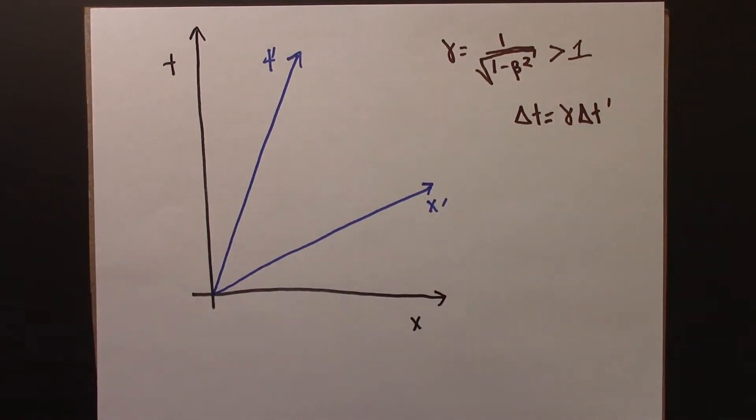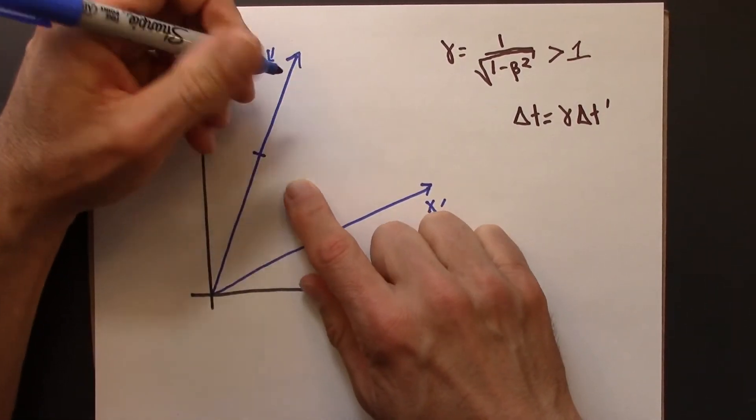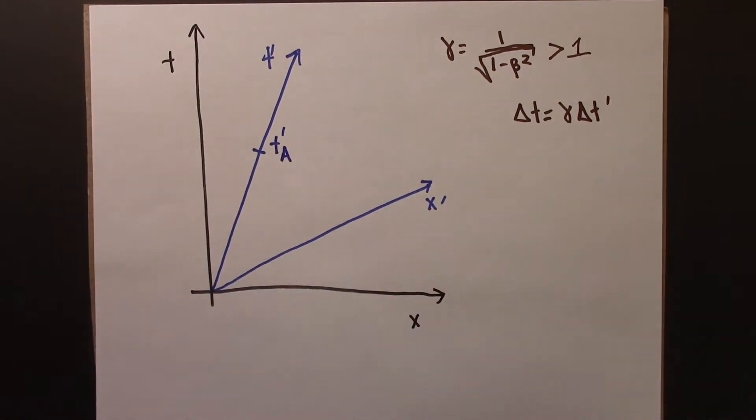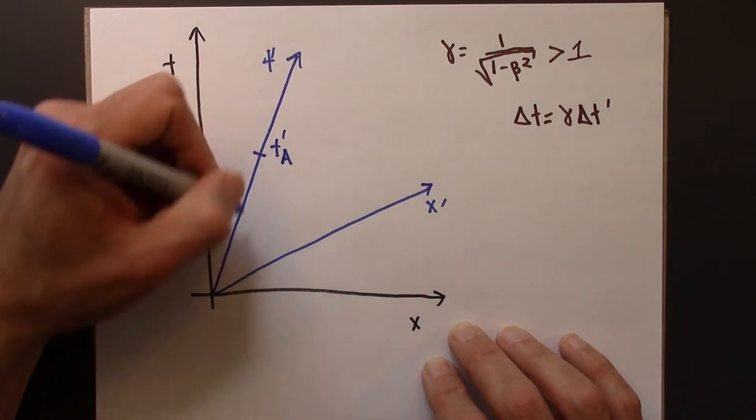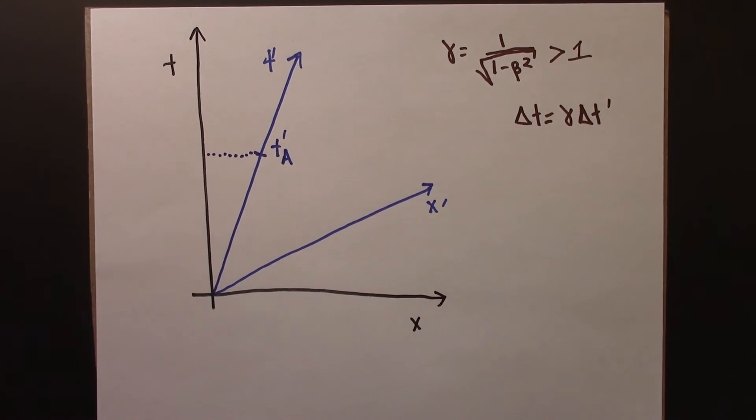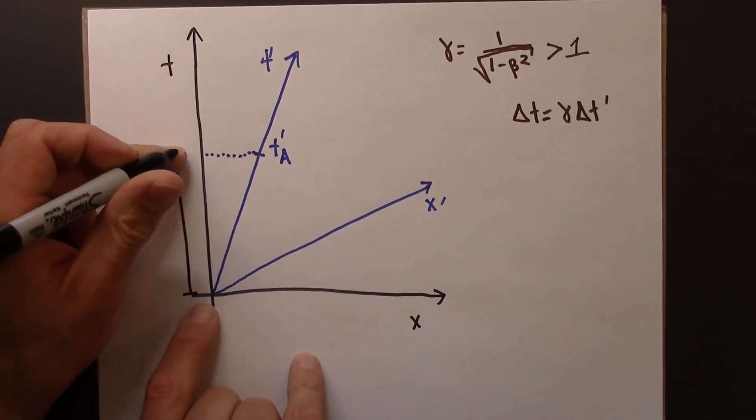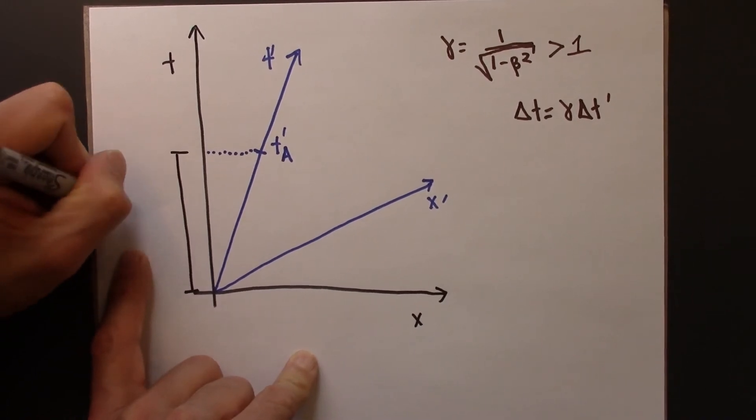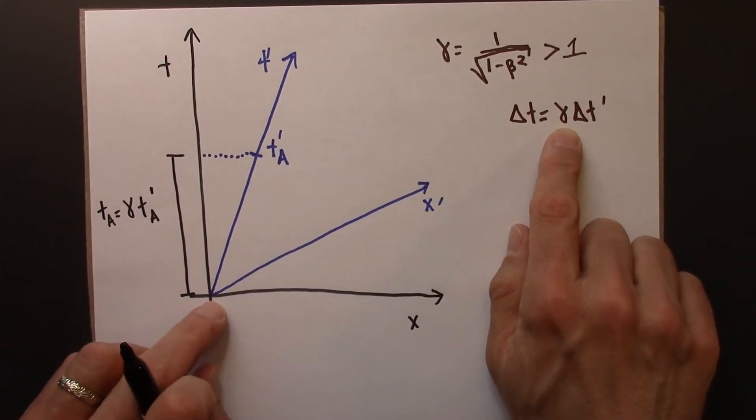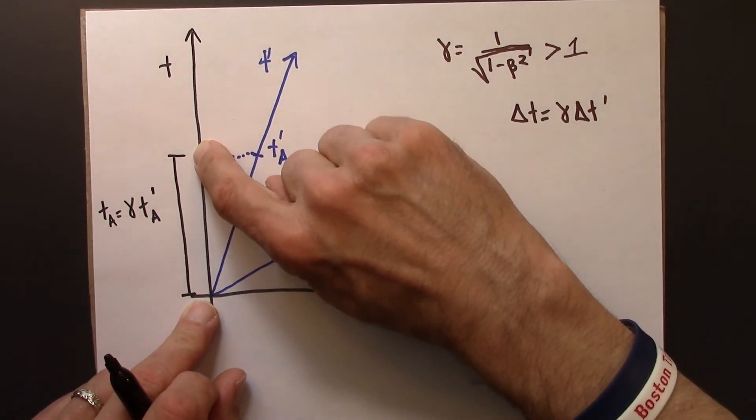So in general, let me just sort of draw a picture to go with this. Suppose I have some time reading here, t prime, t prime a, something, some particular time reading on this time axis of Beowulf. If I want to know what Anna would think about it, this formula tells me that that time, from 0 to here, that time is going to be just gamma times t_a prime. So we can use this to convert from a time reading on Beowulf's axis to what Anna would think for that time.